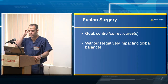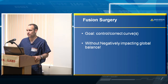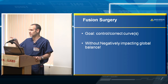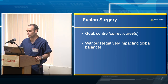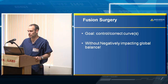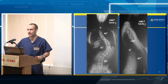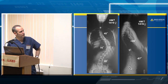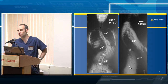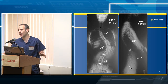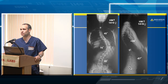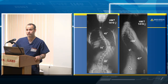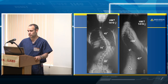In terms of fusion surgery, when fusion is considered the goal is to correct the curve without negatively impacting global balance — both sagittal and pelvic. If you drop a C7 plumb line and match it with the central sacral vertical line and this patient is in balance, then when you change the curve you cannot shift them off to the side or forward, because outcomes with that are terrible.